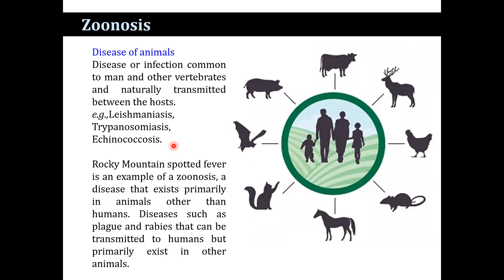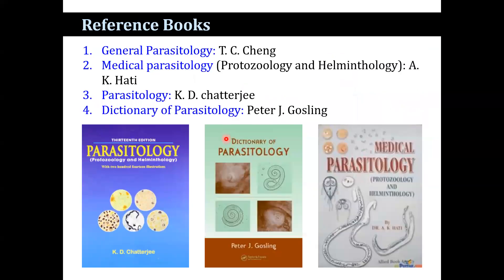Disease of animals, that is zoonosis, is a disease or infection that is common not only to man but also to other vertebrates, and is naturally transmitted between hosts — such as leishmaniasis, Echinococcus, and Rocky Mountain spotted fever. These are examples of zoonosis — diseases that exist primarily in animals other than humans, such as plague and rabies, which can be transmitted to humans. Reference books include General Parasitology by T.C. Cheng, Medical Parasitology by Abhijit, Parasitology by K.D. Chatterjee, and Dictionary of Parasitology by Peter J. Gosling. Thank you, everybody.